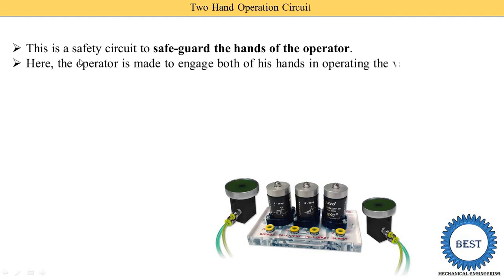The operator is made to engage both hands in operating the valves for making the double acting cylinder extend. It is not necessary that every system uses a double acting cylinder — in some systems a rotary actuator is also used. Engaging both hands of the operator reduces the chances of accident, which is why it is called a safety circuit.